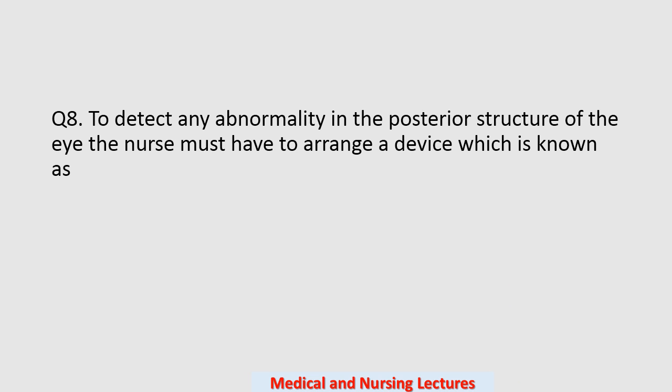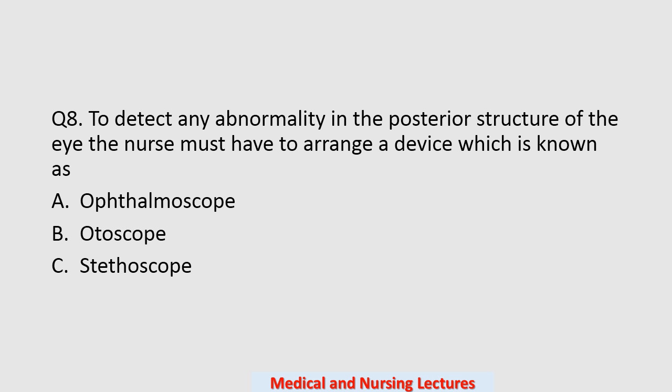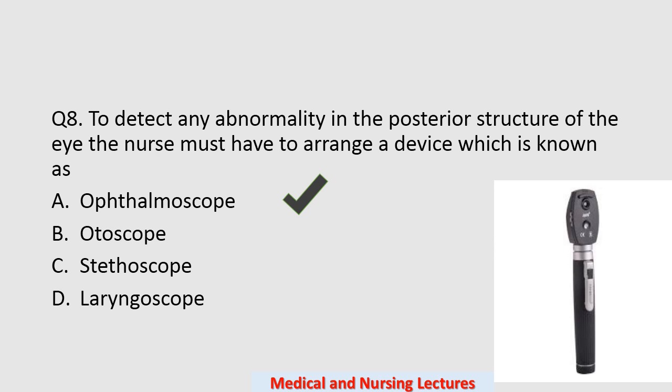Question number eight: to detect any abnormality in the posterior structure of the eye, the nurse must arrange a device known as — options are ophthalmoscope, otoscope, stethoscope, or laryngoscope. The correct option is ophthalmoscope.